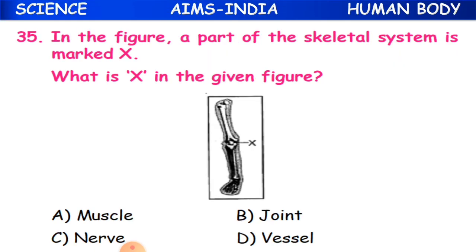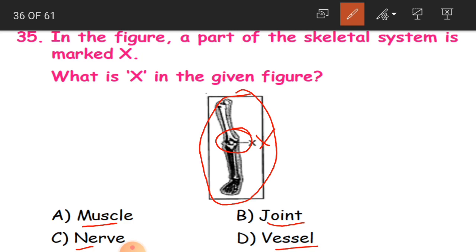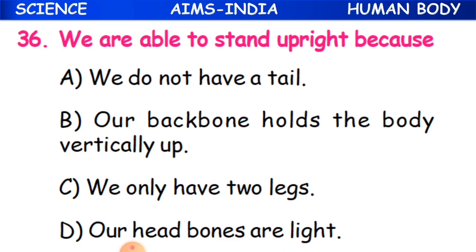Question 35: In the figure, a part of the skeletal system is marked X. What is X? The options are muscle, joint, nerve, or vessel. If you observe carefully, X is joining two separate bones together, so we call this a joint. B is the correct answer.